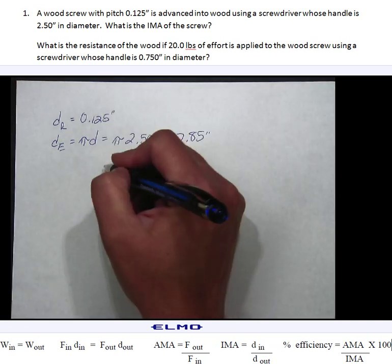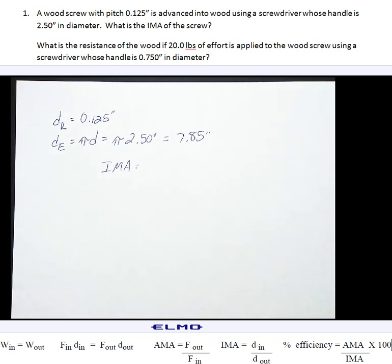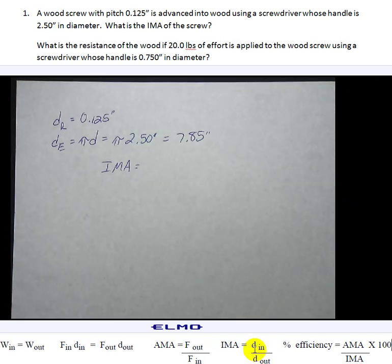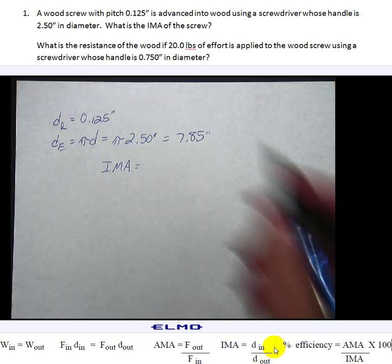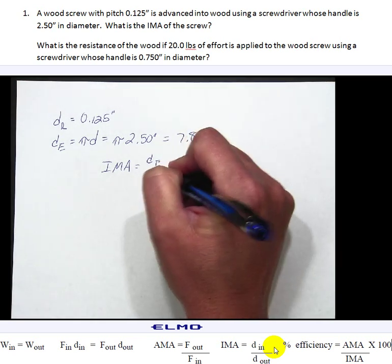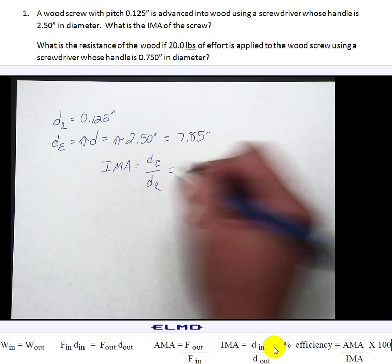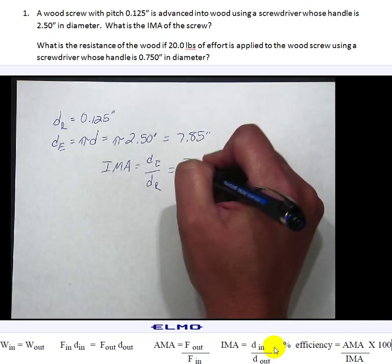Alright so IMA equals, right down here we look distance in over distance out, resistance in is also effort over distance out which is resistance. So plug in the numbers.